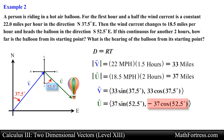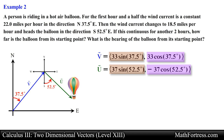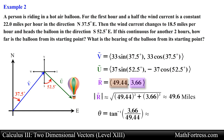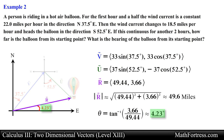Notice that the y component of vector u is negative since it points towards the negative y axis. Adding vector v and vector u component-wise, we find the magnitude of the resulting vector, which is approximately equal to 49.6 miles. We find the direction using inverse tangent on the components of the resulting vector, obtaining 85.8 degrees east from north.